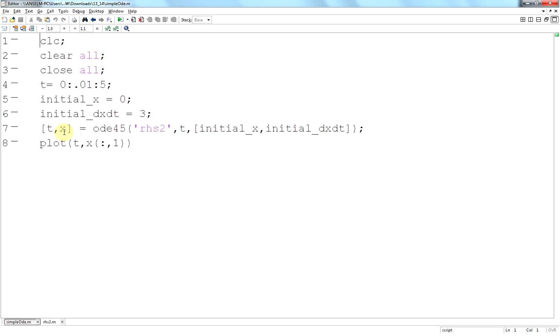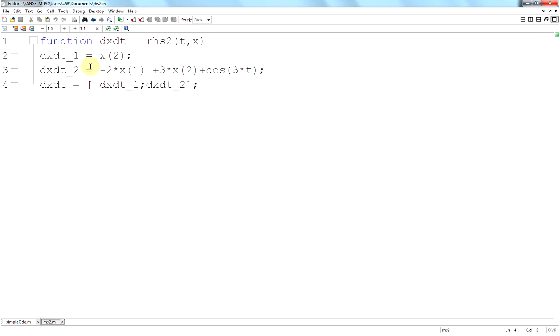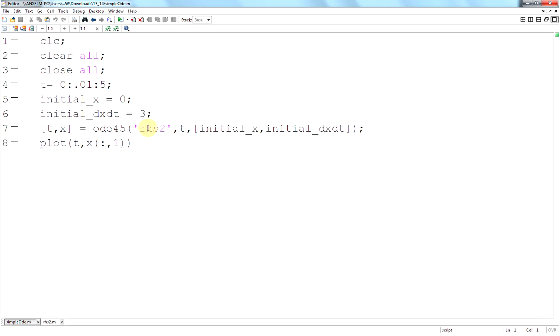So the left-hand side is what we dig out, ODE45, the function which we'll look at in a second. The time span, the initial x value, and the initial dxdt value. There's my function, RHS2, just go back there a second. RHS2.